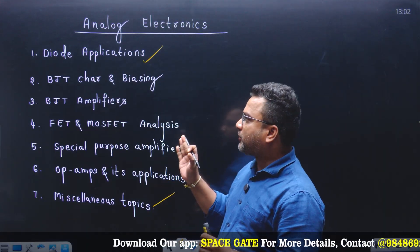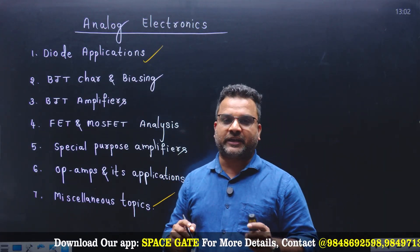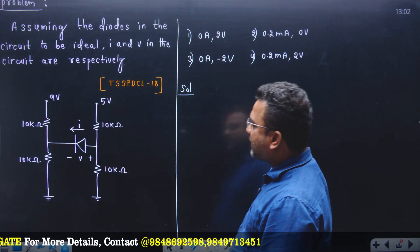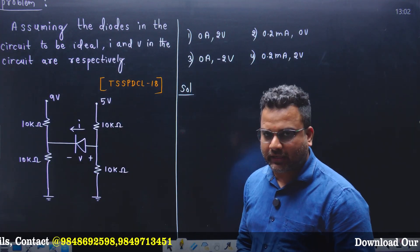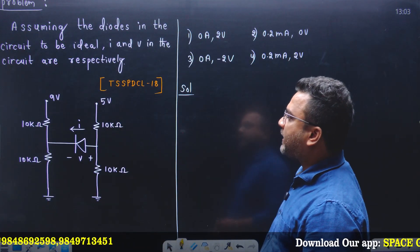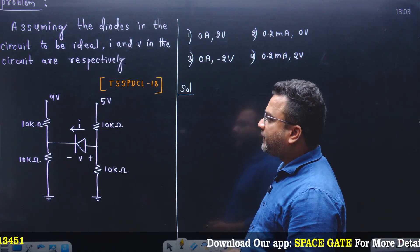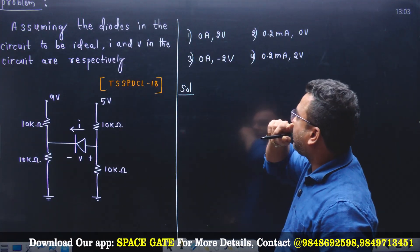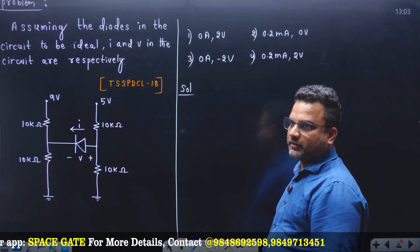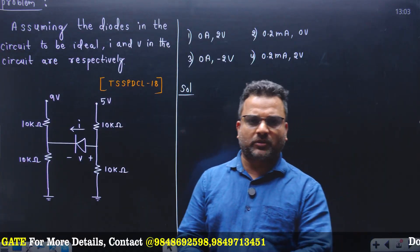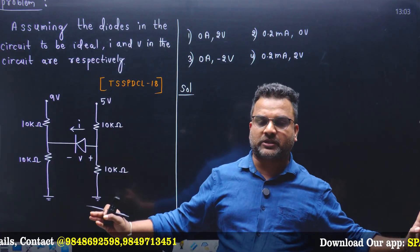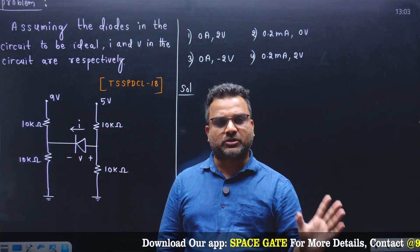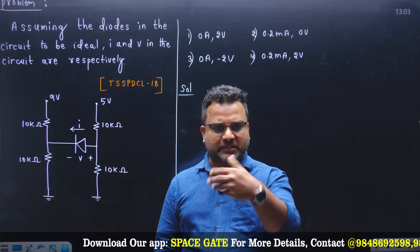Let's see sample questions on simple diode circuits from unit one diode applications. This question was asked in TS SPDCL 2018. Assuming the diodes in the circuit to be ideal, find I and V in the circuit. There are different approximations for a diode - open circuit or short circuit - but the best one is to assume the diode is off, calculate anode voltage and cathode voltage.